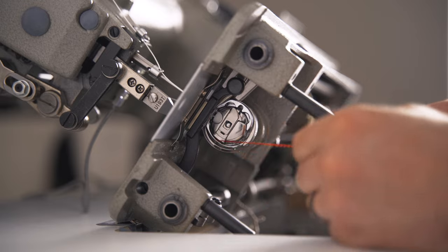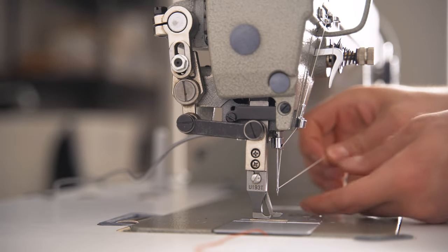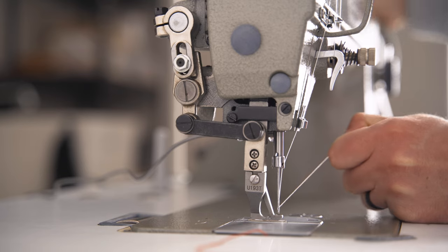To pick up the bobbin thread, lift the presser foot while holding your top thread and turn the flywheel one complete turn towards you.